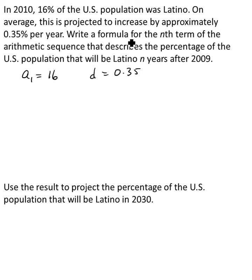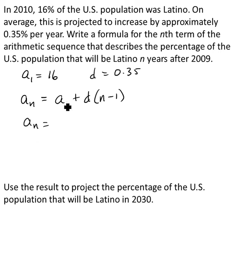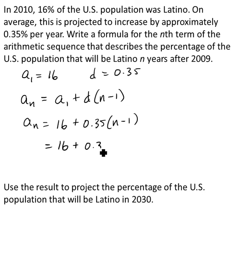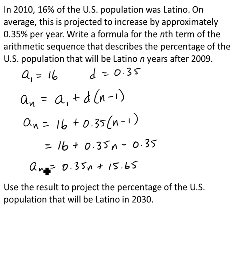To get a formula for the nth term, the general formula for an arithmetic sequence is AN equals A1 plus D times (N minus 1). Substituting in our values: AN equals 16 plus 0.35 times (N minus 1). Distributing the 0.35 gives 0.35N minus 0.35, and combining 16 minus 0.35 gives 15.65. So our formula for the nth term is AN equals 0.35N plus 15.65.